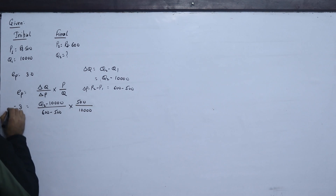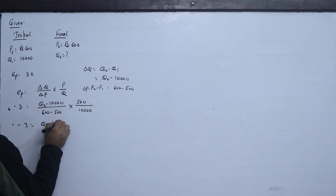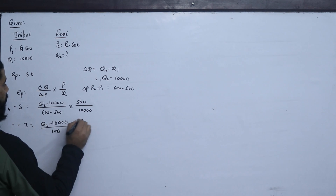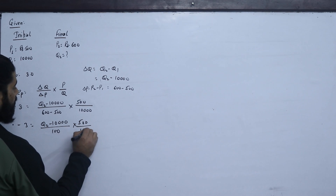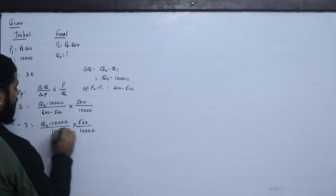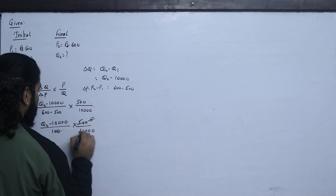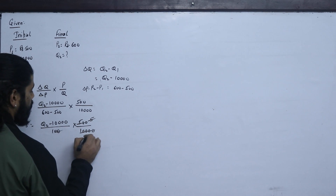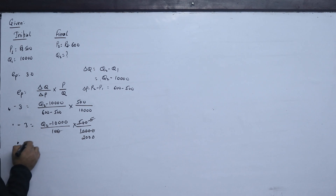Now let's simplify: minus 3 equals (Q2 − 10,000) / 100 × (500 / 10,000). Let's solve this.